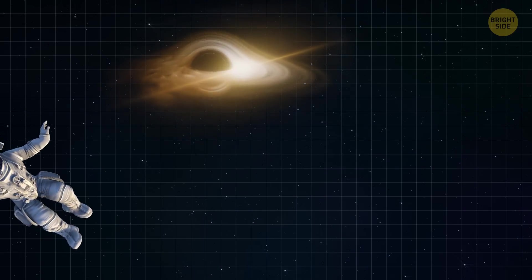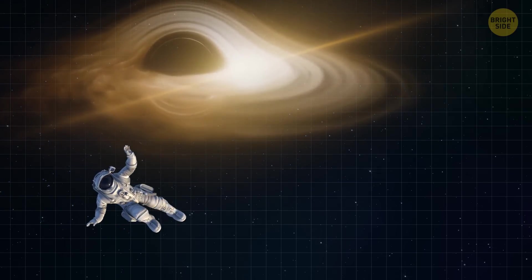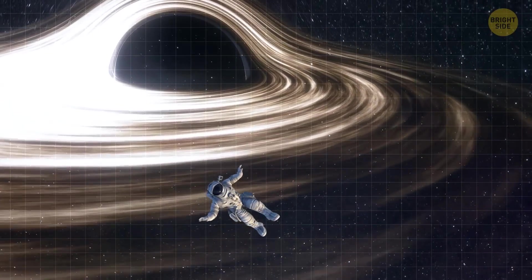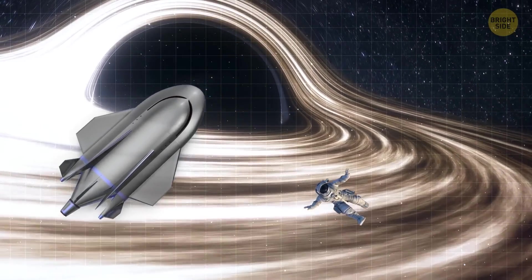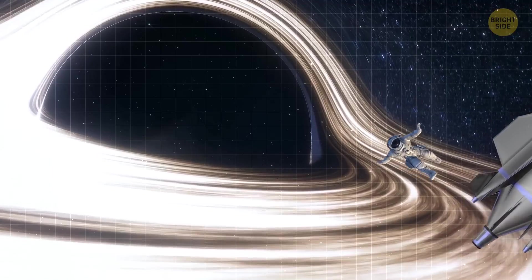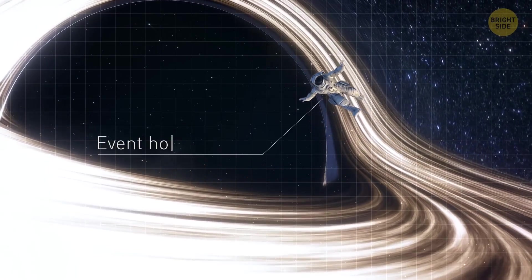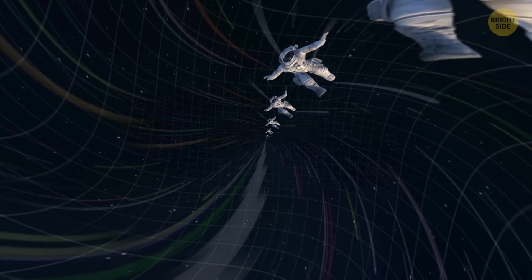As you get closer, things get even more complicated. Making even the tiniest change in direction would require a tremendous amount of energy that you wouldn't be able to generate. It's like trying to steer a spaceship with no fuel left. This is because the black hole's gravitational pull is immensely strong. Once you pass the point called the event horizon, there's no coming back. You wouldn't be able to control anything.